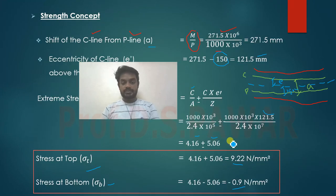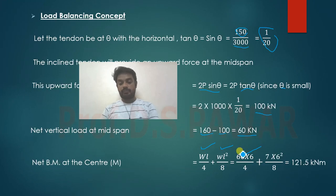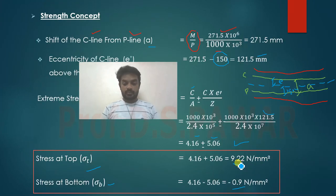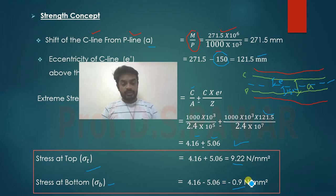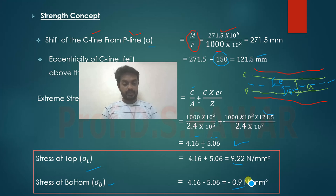At the top and bottom fibers, the stresses are again 9.22 N/mm² and -0.9 N/mm², confirming that all three concepts — stress concept, strength concept, and load balancing concept — give identical results. This concludes the problem. The next lecture will cover the parabolic tendon profile and how to calculate stresses with eccentricity at mid-span.